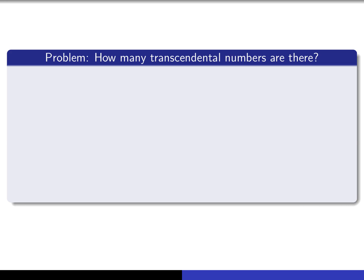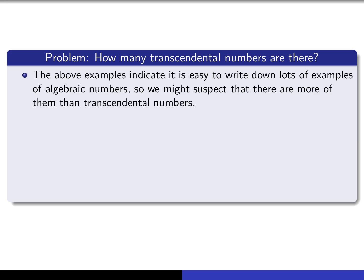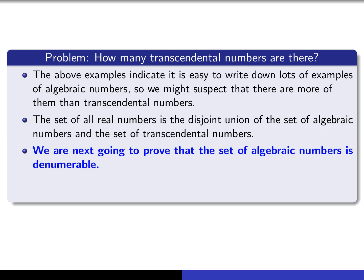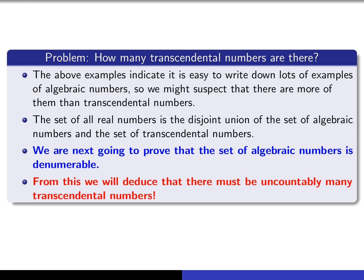Here's the main problem we want to consider: how many transcendental numbers are there? Since it's so hard to produce even a single transcendental number, we might suspect that there really aren't very many of them. But the set of real numbers can be written as the disjoint union of the set of algebraic numbers and the set of transcendental numbers. What we're going to prove is that the set of algebraic numbers is actually denumerable, and from this we'll deduce that there must be uncountably many transcendental numbers.